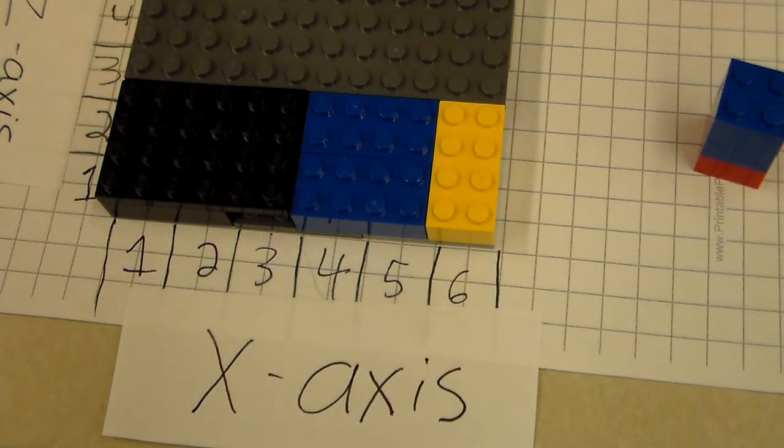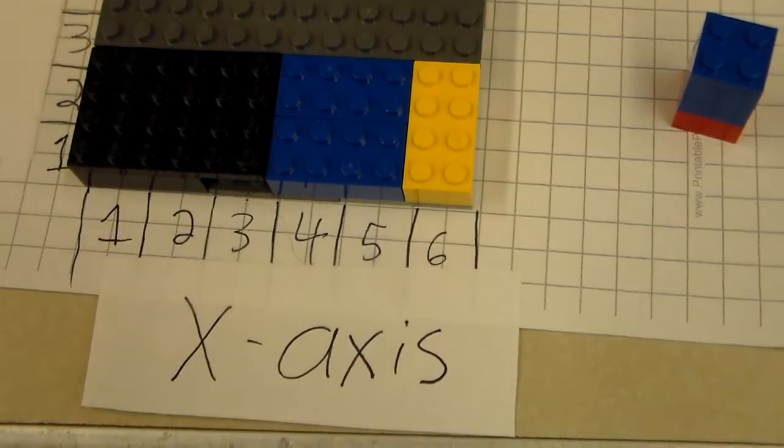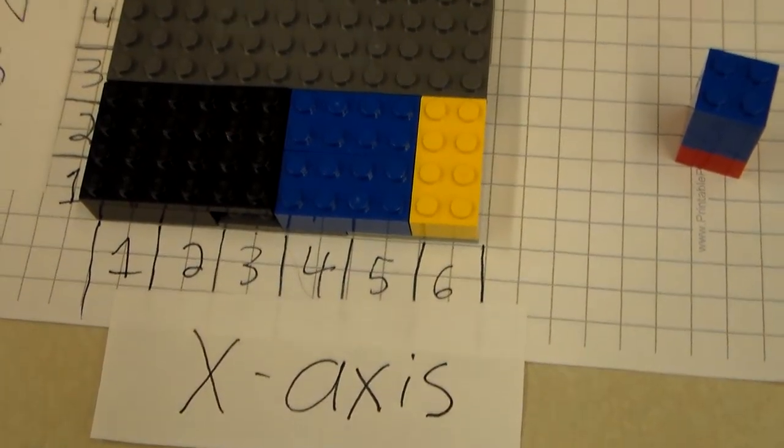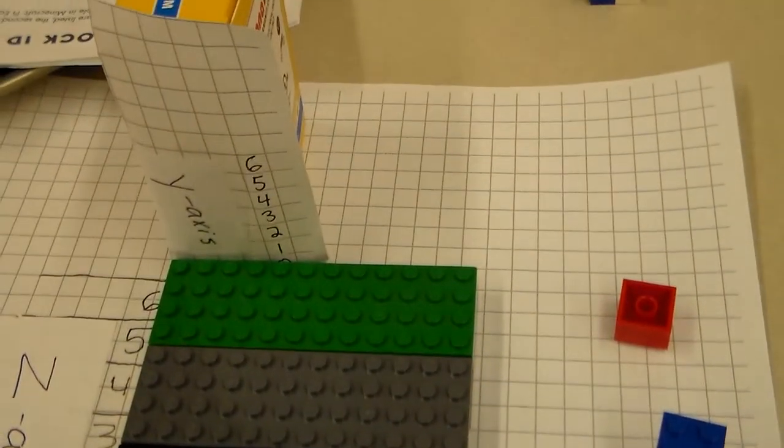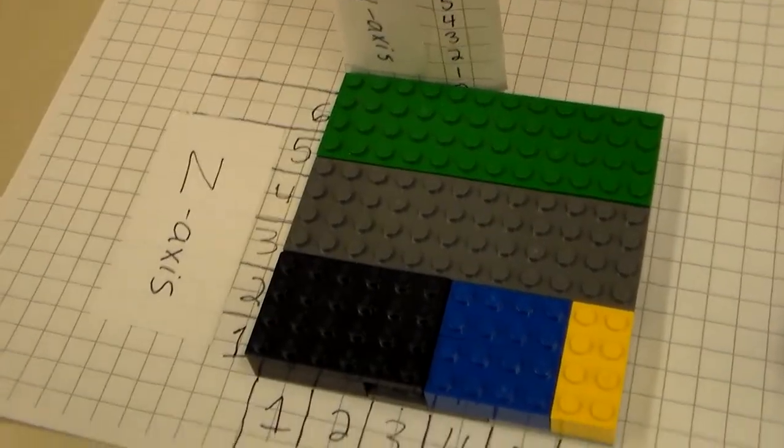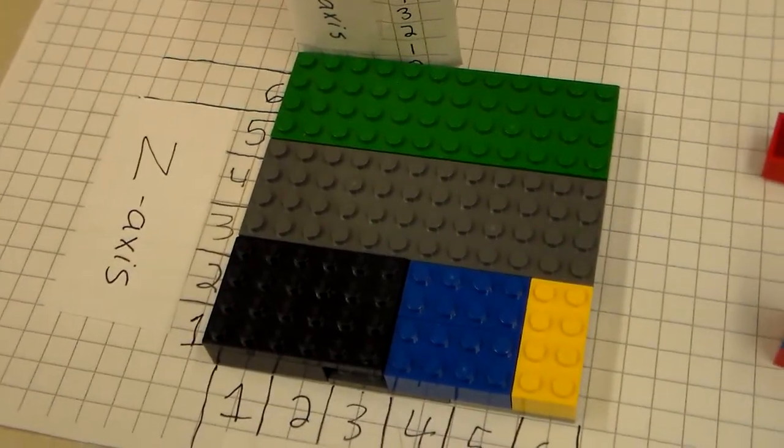Hello. I'm going to explain how the coordinates work in Minecraft. First off, you have an x-axis that moves horizontally, then you have a y-axis that moves up and down, and then you have a z-axis that also moves horizontally.